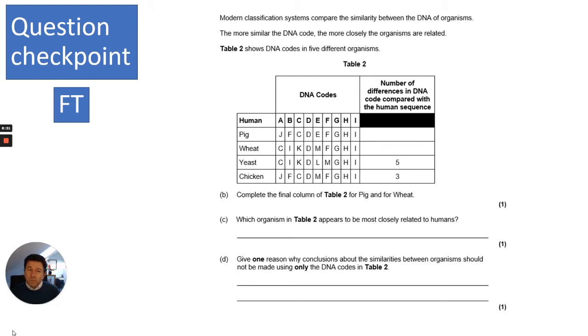This is a bit more of a difficult question. Again, I'd like you to pause, read it, and answer in three, two, one. Modern classification systems compare the similarity between the DNA of organisms. The more similar the DNA code, the more closely the organisms are related. They show a DNA code in five different organisms, and it says complete the final column of table two for pig and wheat.